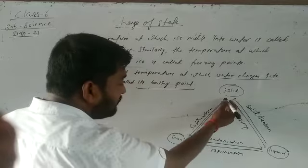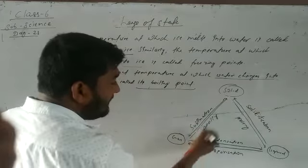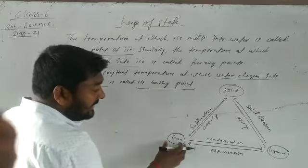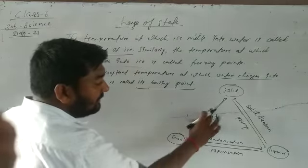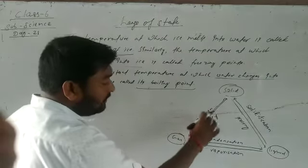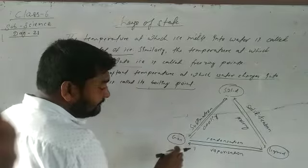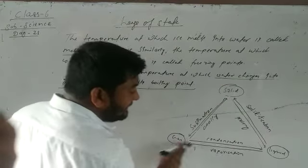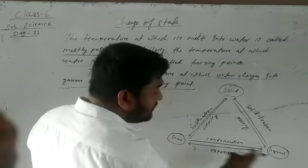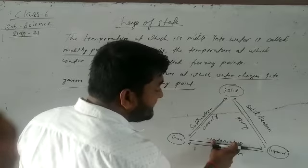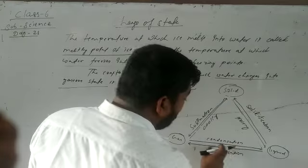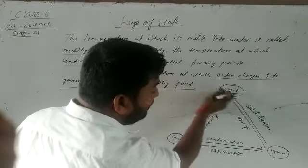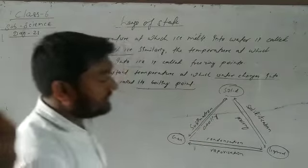From solid, we can directly make gas with the help of sublimation. Then directly from gas to liquid is condensation. After condensation, converting back to solid is solidification.